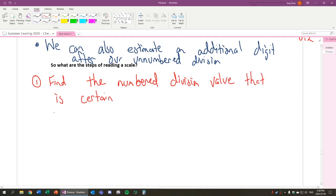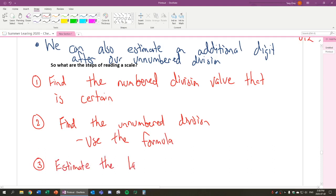What do we do? Step number 1 is find the numbered division value that is certain. Find the numbered division value. So if the value is past 42, it must be 42. Number 2, find the unnumbered division. So whatever that is, you could use the formula to help you out. And lastly, number 3, estimate an additional digit. But this estimated value is going to be uncertain.